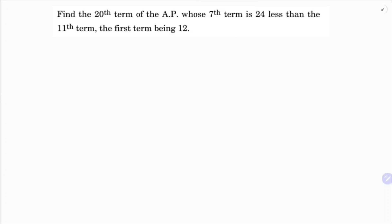Find the 20th term of the AP whose 7th term is 24 less than the 11th term. We need to find a20. The formula is an = a + (n - 1)d, so a20 will be a + (20 - 1)d.